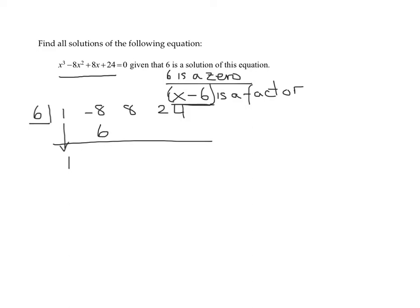And then you add these two numbers. So, negative 8 plus 6 is negative 2. And then we repeat the process. 6 times negative 2 is negative 12. Then we're going to add 8 and negative 12. And we get negative 4.